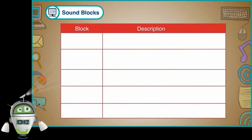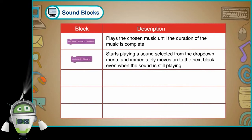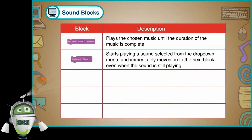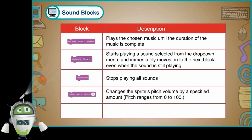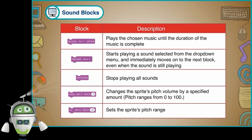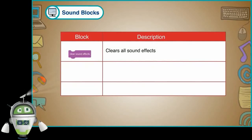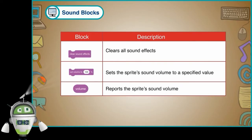Plays the chosen music until the duration of the music is complete. Starts playing a sound selected from the drop-down menu and immediately moves on to the next block even when the sound is still playing. Stops playing all sounds. Changes the sprite's pitch volume by a specified amount — pitch ranges from 0 to 100. Sets the sprite's pitch range. Clears all sound effects. Sets the sprite's sound volume to a specified value, and reports the sprite's sound volume.